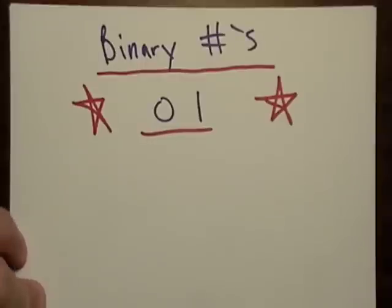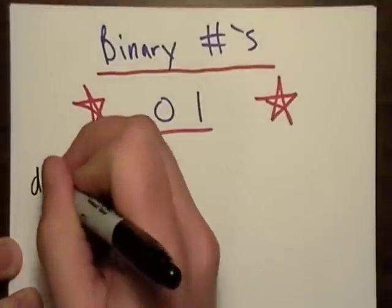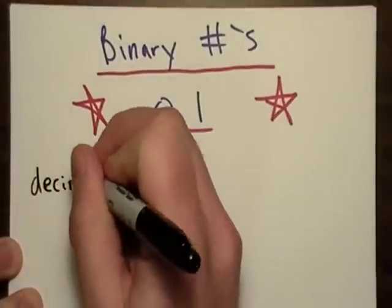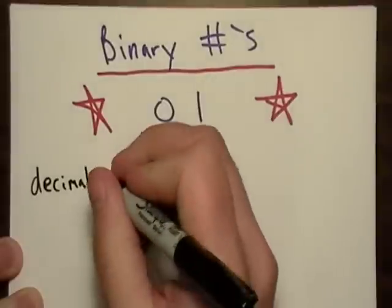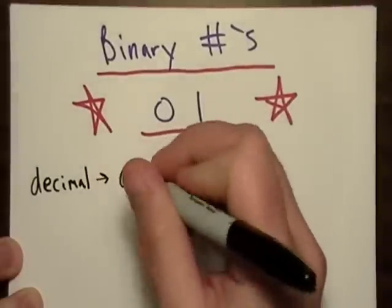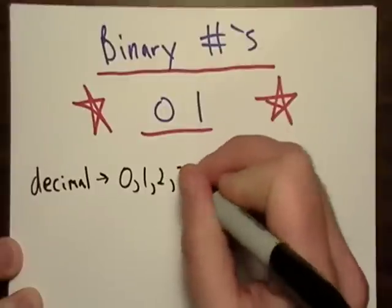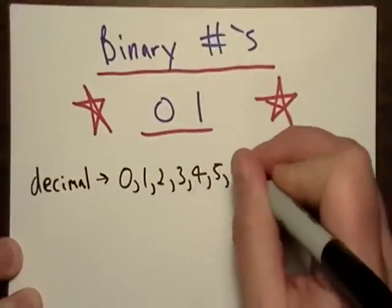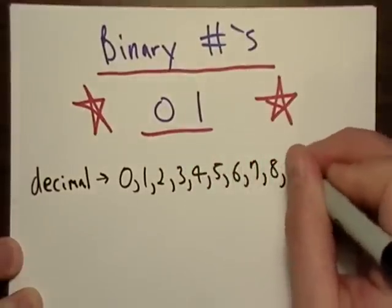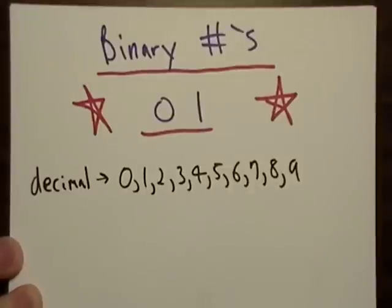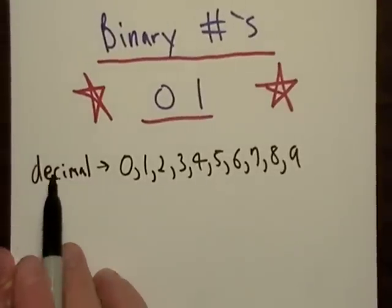Let's talk about binary numbers today. First, let's talk about our current number system — the one we use every day. That's 0, 1, 2, all the way to 9. It doesn't include 10. And it's called decimal.